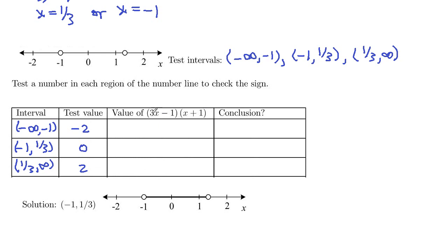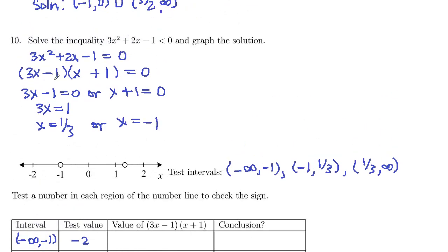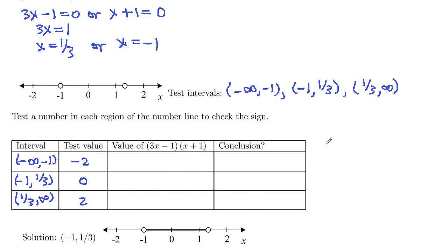And then we'll plug those in here to our factored left-hand side, 3x minus 1, x plus 1. And we want to see, is it less than 0? So we're going to keep everything that's less than 0. So we'll plug negative 2 in. So this will be 3 times negative 2 minus 1, and then times negative 2 plus 1. So what is that? Negative 6 minus 1, negative 7, and negative 1. Negative 7 times negative 1, positive 7. And 7 is greater than 0, so we're going to reject that interval. Not part of our solution.